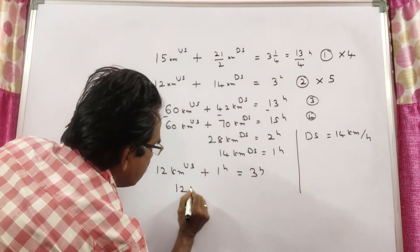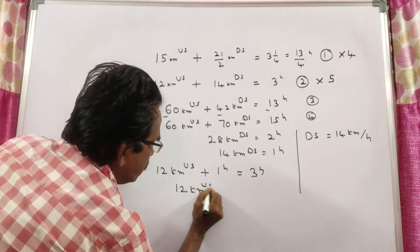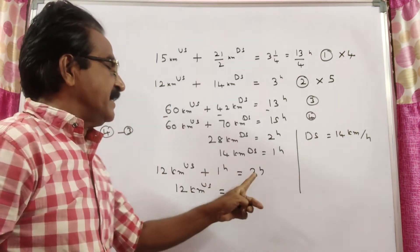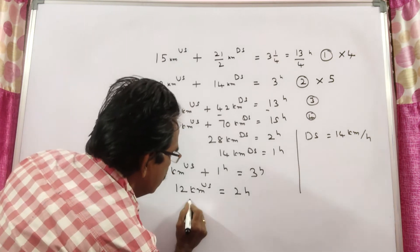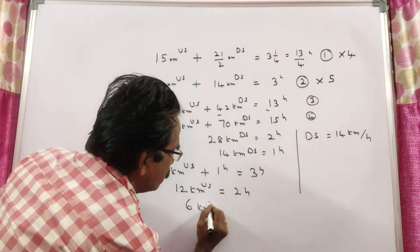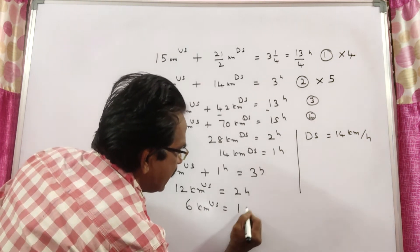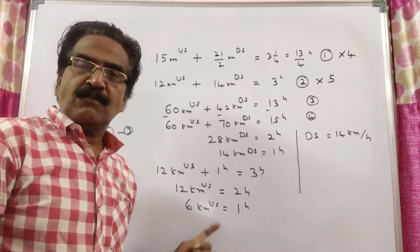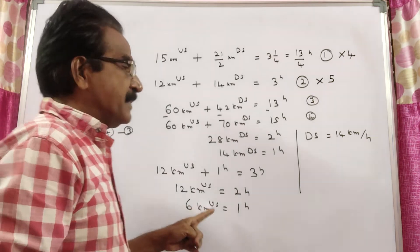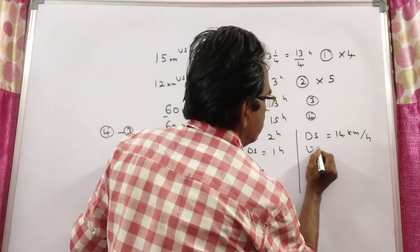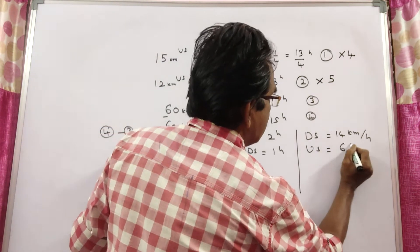So, 6 kilometers upstream is traveled in 1 hour. 12 kilometers 12 hours means 6 kilometers 1 hour. That means upstream speed is equal to 6 kmph.